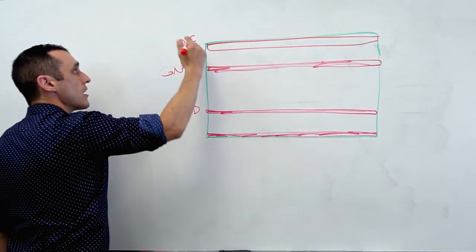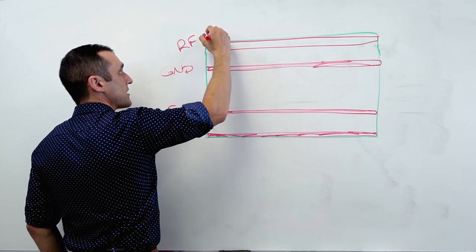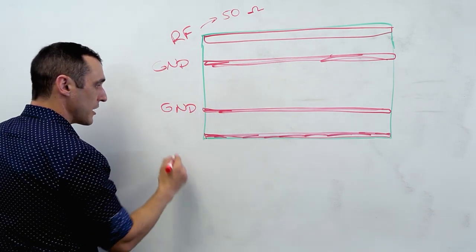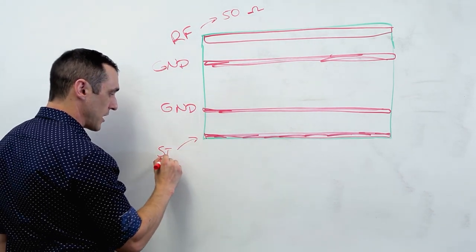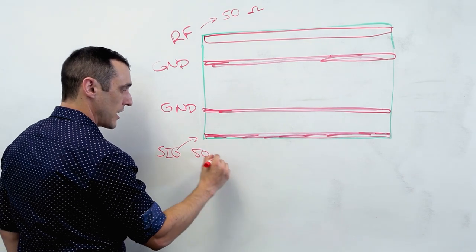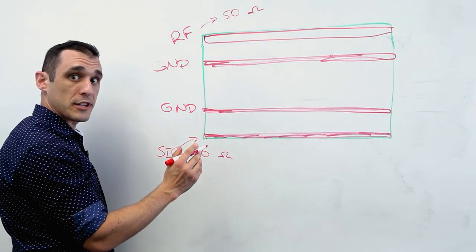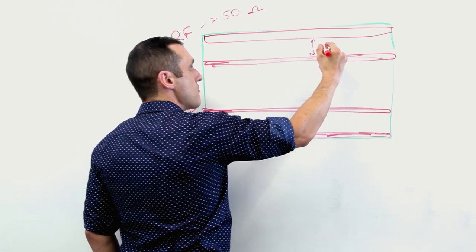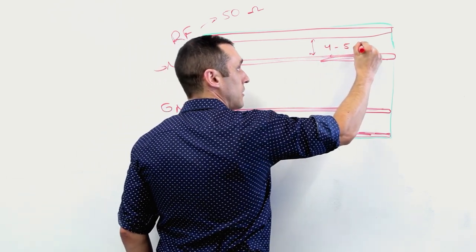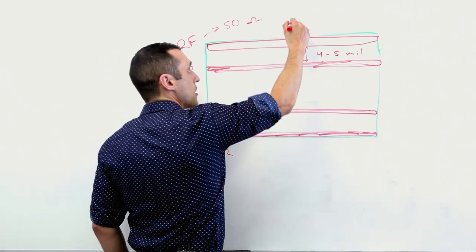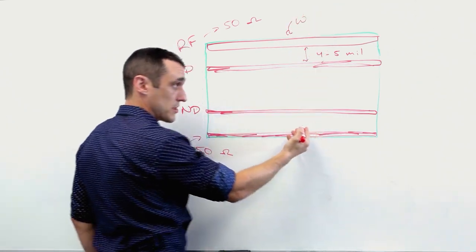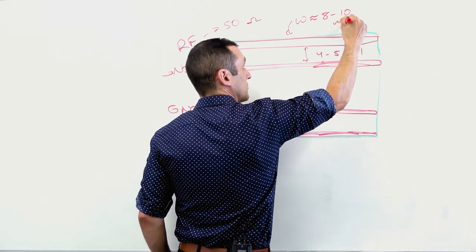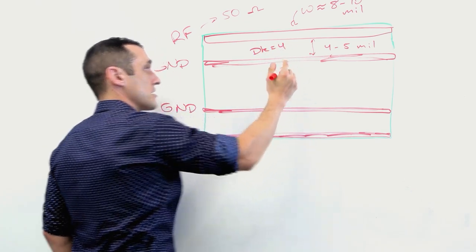One common option, especially if you are going to have a digital section on your board, is just to go with the standard four-layer stack-up. So here I could have my RF stuff on the top layer, I could then have two ground planes, and then I could have another layer on the bottom just for digital. This would be the type of stack-up where you would want to then hit 50 ohm impedance on the top layer just using microstrip routing. Here, if you needed to, you could have this signal layer also hit 50 ohm impedance with just microstrip routing. In order to make these traces small enough, you would want to make this height here maybe four to five mil.